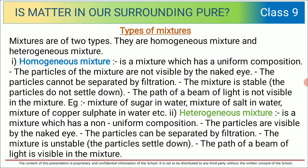The path of a beam of light is not visible in a homogeneous mixture. Examples include: mixture of sugar in water, mixture of salt in water, and mixture of copper sulfate in water. These are all examples of homogeneous mixture.